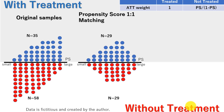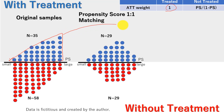This is the formula to compute ATT weight. For people who are treated, the weight is 1, meaning data of treated patients will not be changed. For those not treated, a different weight is applied based on their propensity score.